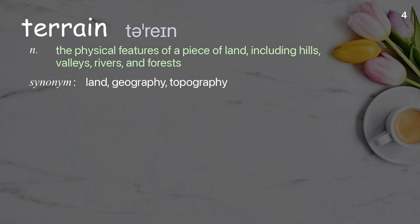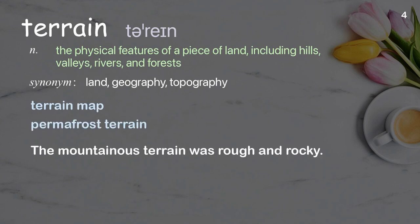Terrain. The physical features of a piece of land, including hills, valleys, rivers, and forests. Examples: terrain map; permafrost terrain. The mountainous terrain was rough and rocky.